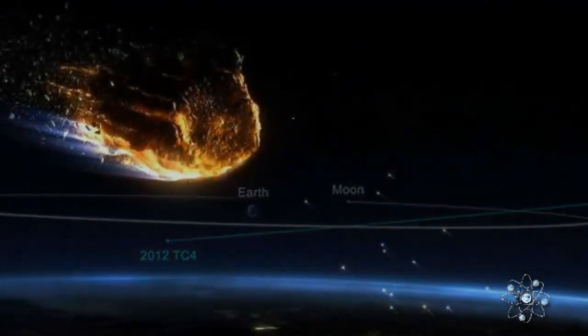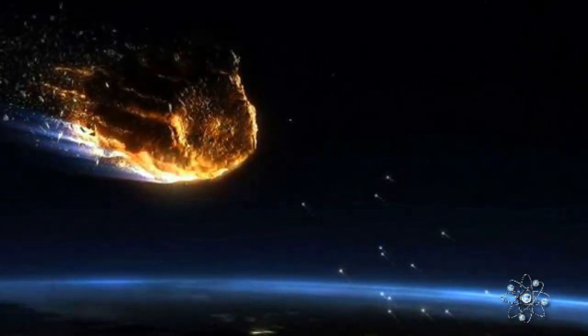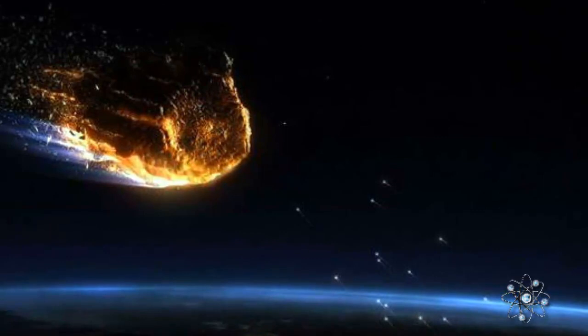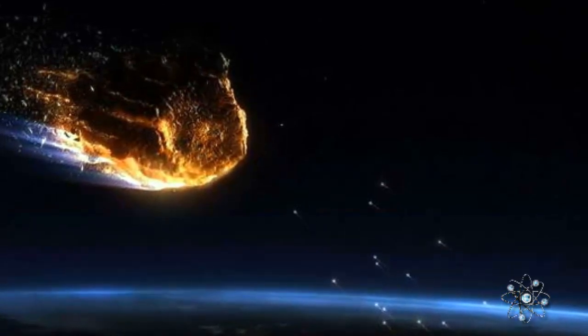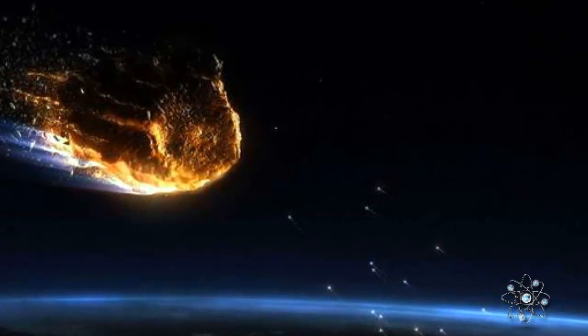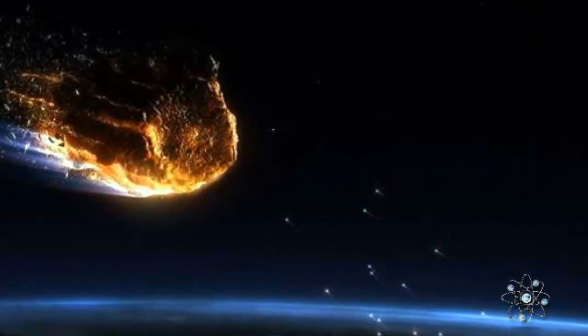Physical properties of an asteroid and its velocity relative to the Earth will influence the effects of an impact. That is one of the reasons we perform follow-up observations to determine those physical properties. NASA is also using the opportunity to test its network of observatories for its planetary defense system in the event an asteroid did actually hit Earth.